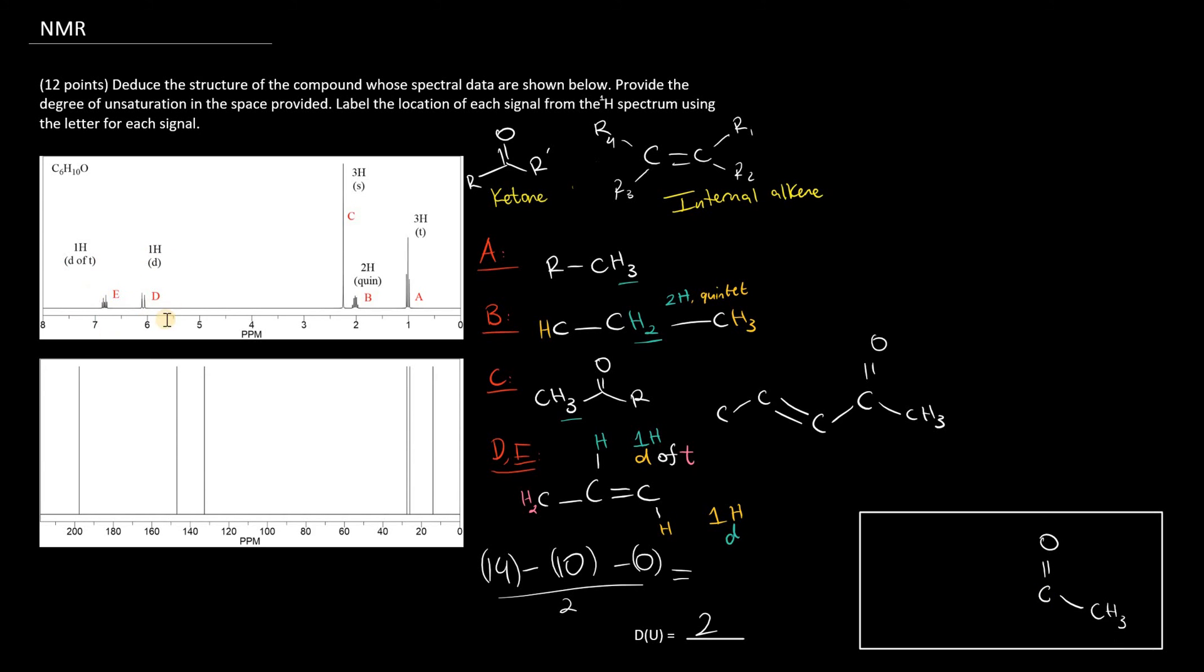Now, because the alkene is very high in frequency, close to 7 parts per million, it must be as close as possible to the carbonyl oxygen. The only possibility there is to have it between the alpha and beta carbons. Now, we have four carbons. Two are remaining to satisfy the molecular formula.